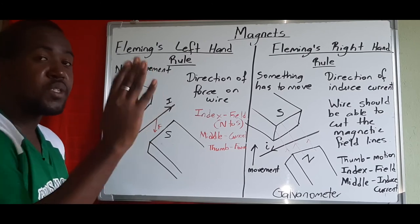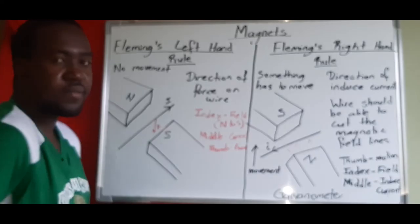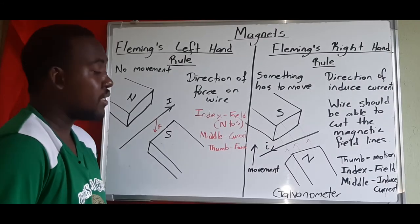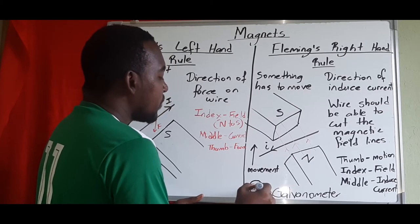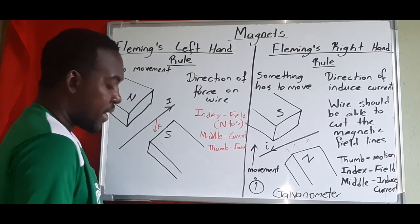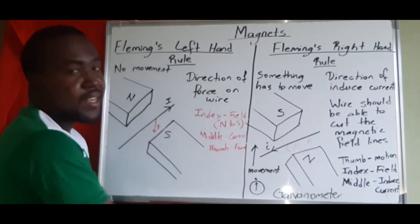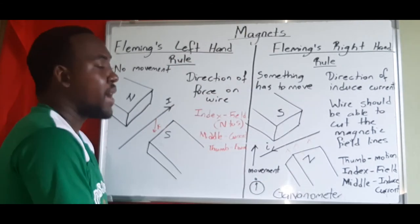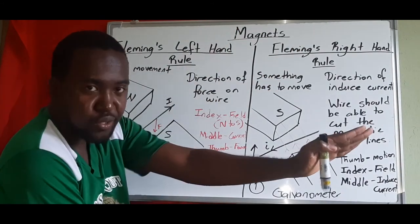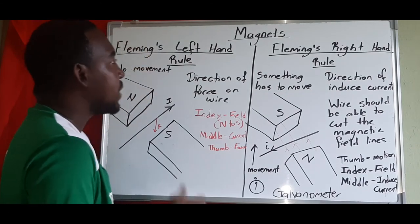The induced current is a very small current, so in the lab we use a galvanometer to detect it. A galvanometer is very sensitive and will deflect left or right depending on the direction of the induced current. If there is no induced current, the galvanometer reads dead center — zero. When the wire moves up, the galvanometer deflects one way; when it moves down, it deflects the other way. Moving parallel to the field lines gives zero reading.